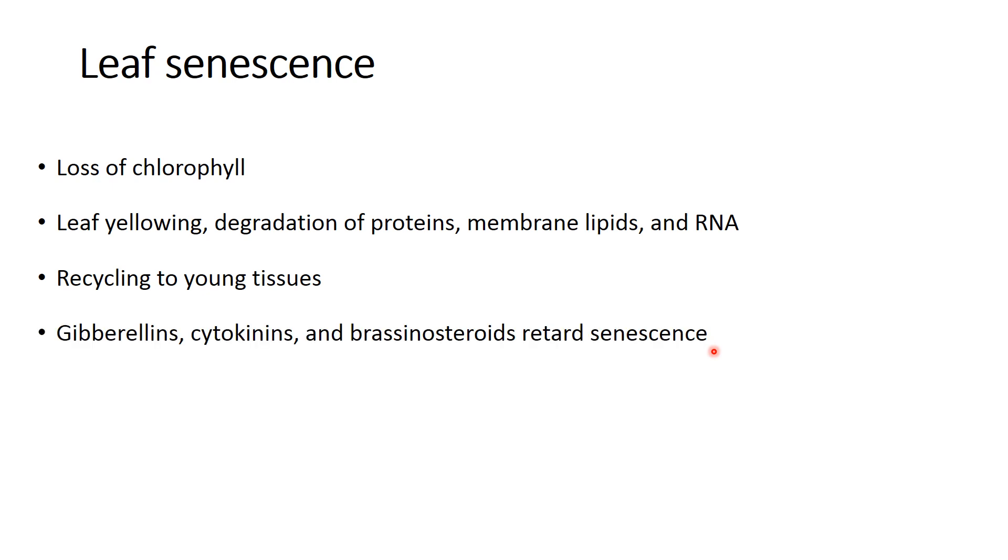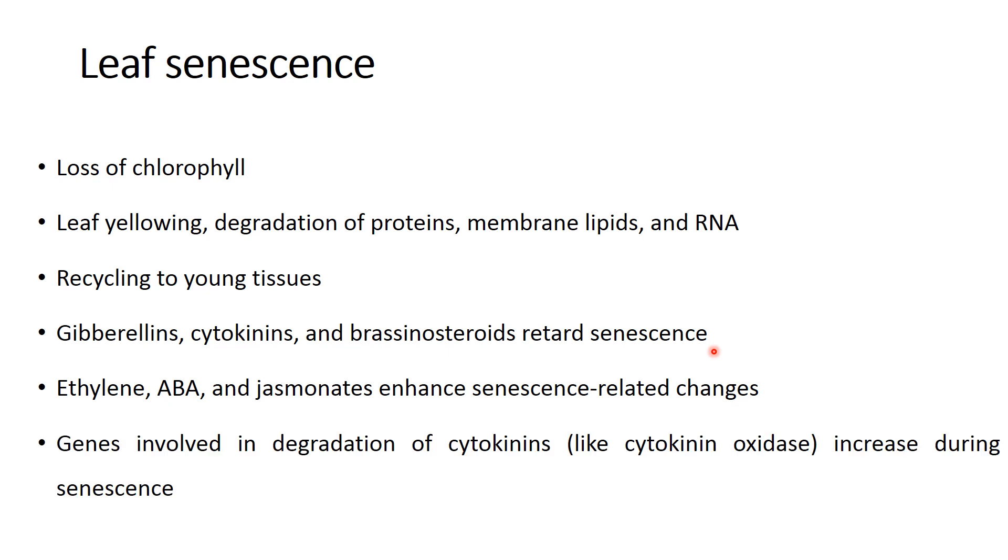There are plant hormones which are responsible for delaying senescence. For example, gibberellin, cytokinin, and brassinosteroids. Other hormones, for example ethylene, abscisic acid, and jasmonates - these hormones enhance the senescence-related changes. Various genes are involved in causing leaf senescence. As here you can see, cytokinin oxidase - this enzyme degrades the cytokinin and induces leaf senescence.